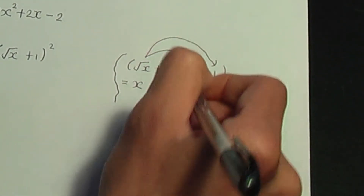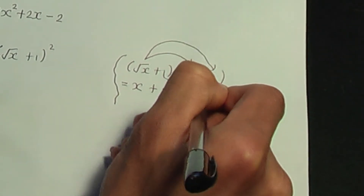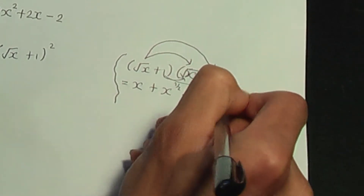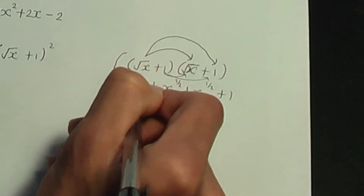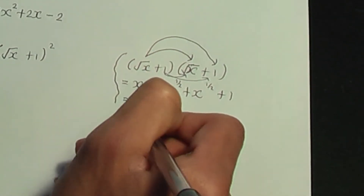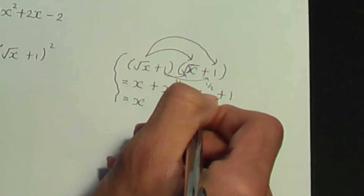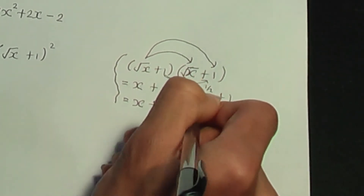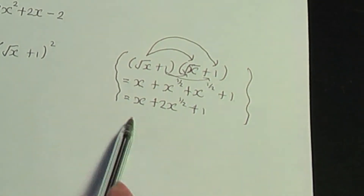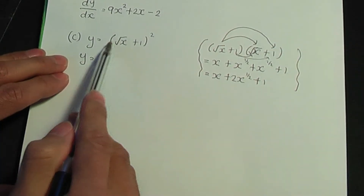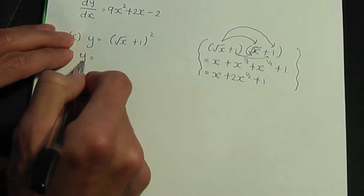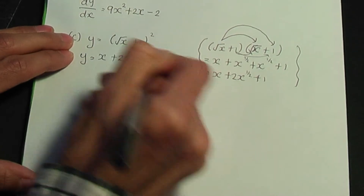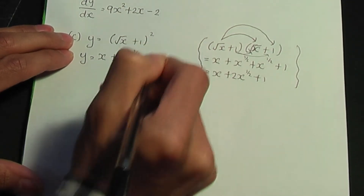And 1 times root x is root x — let's keep it as x to the power half. If I simplify by adding the like terms: I have x, then x to the half plus x to the half is 2x to the power half, plus the 1 at the end. So if you expand the brackets, you should get y is equal to x plus 2x to the power half plus 1.